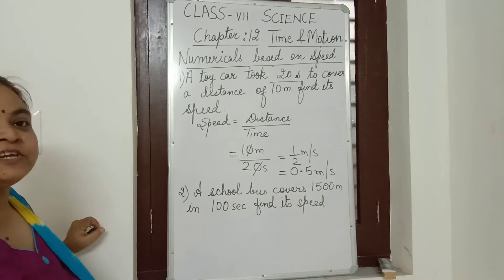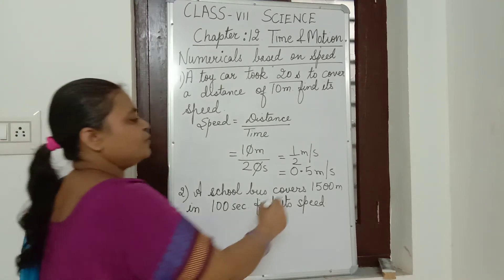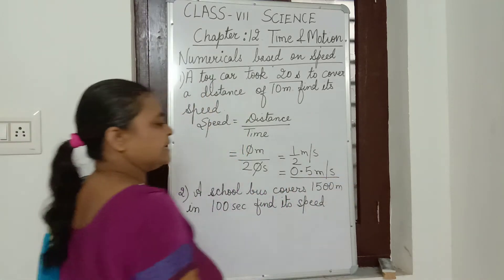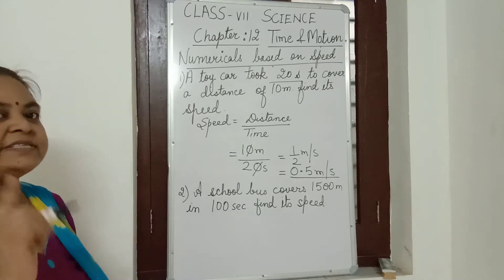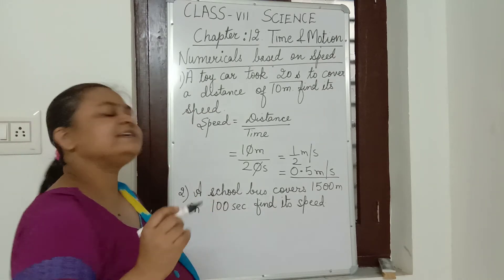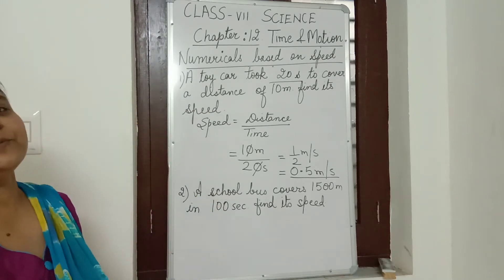So what is the speed of the toy car? It is 0.5 meter per second. In one second, the toy car is travelling 0.5 meters.